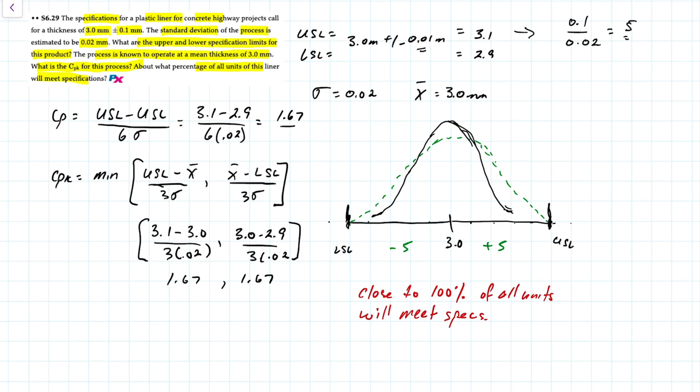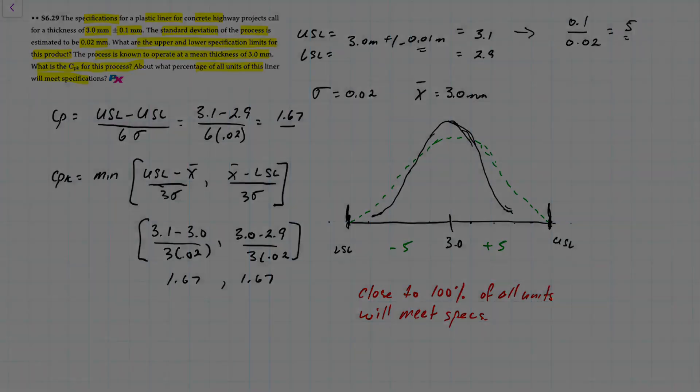It won't be as good as six sigma quality because six sigma is 2.7 defects per million, so this would be pretty close to that. But it's very small. And there you go. CP and CPK.